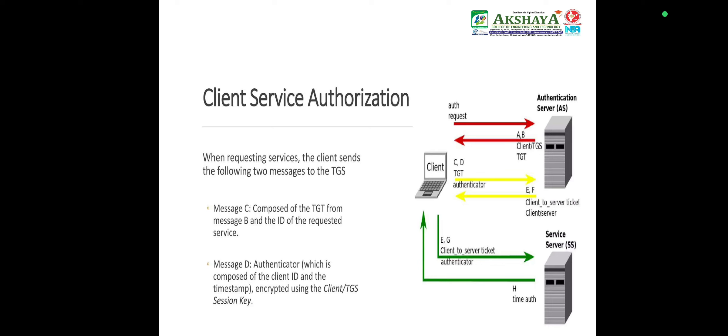Client service request: Upon receiving messages E and F from the TGS, the client has enough information to authenticate itself to the service server (SS). The client connects to the SS and sends two messages: Message E (the client-to-server ticket encrypted using the service secret key) and Message G (a new authenticator which includes the client ID and timestamp, encrypted using the client-server session key). The SS decrypts the ticket using its own secret key to retrieve the client-server session key, then decrypts the authenticator and sends a confirmation message to the client to confirm its true identity and willingness to serve the client.